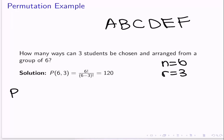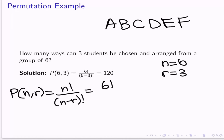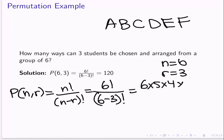So the permutation P(N, R) equals N factorial over N minus R factorial. That means we have 6 factorial over 6 minus 3 factorial, which is 6 factorial over 3 factorial. Now, 6 factorial is 6 times 5 times 4 times 3 times 2 times 1, but 3 times 2 times 1 is just 3 factorial. So we have 6 factorial written as 6 times 5 times 4 times 3 factorial, over 3 factorial — and the 3 factorials cancel, leaving us with 6 times 5 times 4.